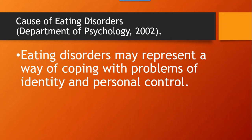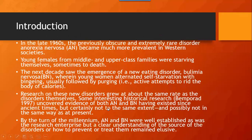In the late 1960s, the previously obscure and extremely rare disorder anorexia nervosa became much more prevalent in western societies. Young females from middle and upper class families were starving themselves, sometimes to death. The next decade saw the emergence of a new eating disorder, bulimia, wherein young women alternated self-starvation with binging, usually followed by purging — active attempts to rid the body of calories.